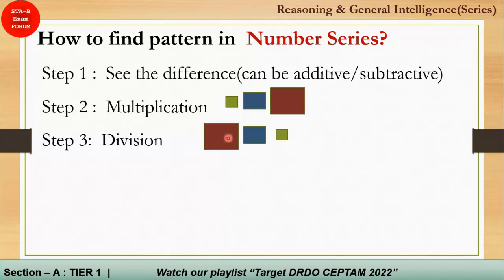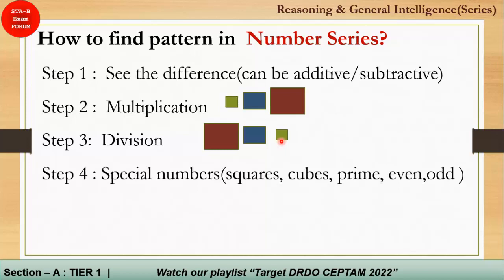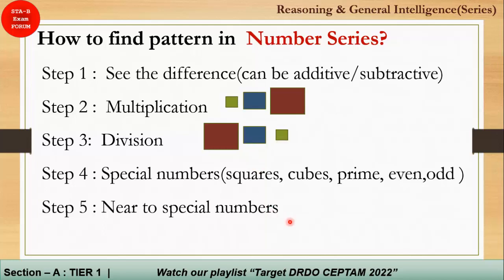Similarly, for division: if numbers start large and decrease very sharply, a division operation is applied. If nothing works, check for special numbers — whether the terms could be squares, cubes, primes, or even/odd. Also consider numbers near a special number, for example 35 is near 36 (6 squared). The last case is a double operation, where multiple steps are applied — this is complex and less commonly expected in exams.